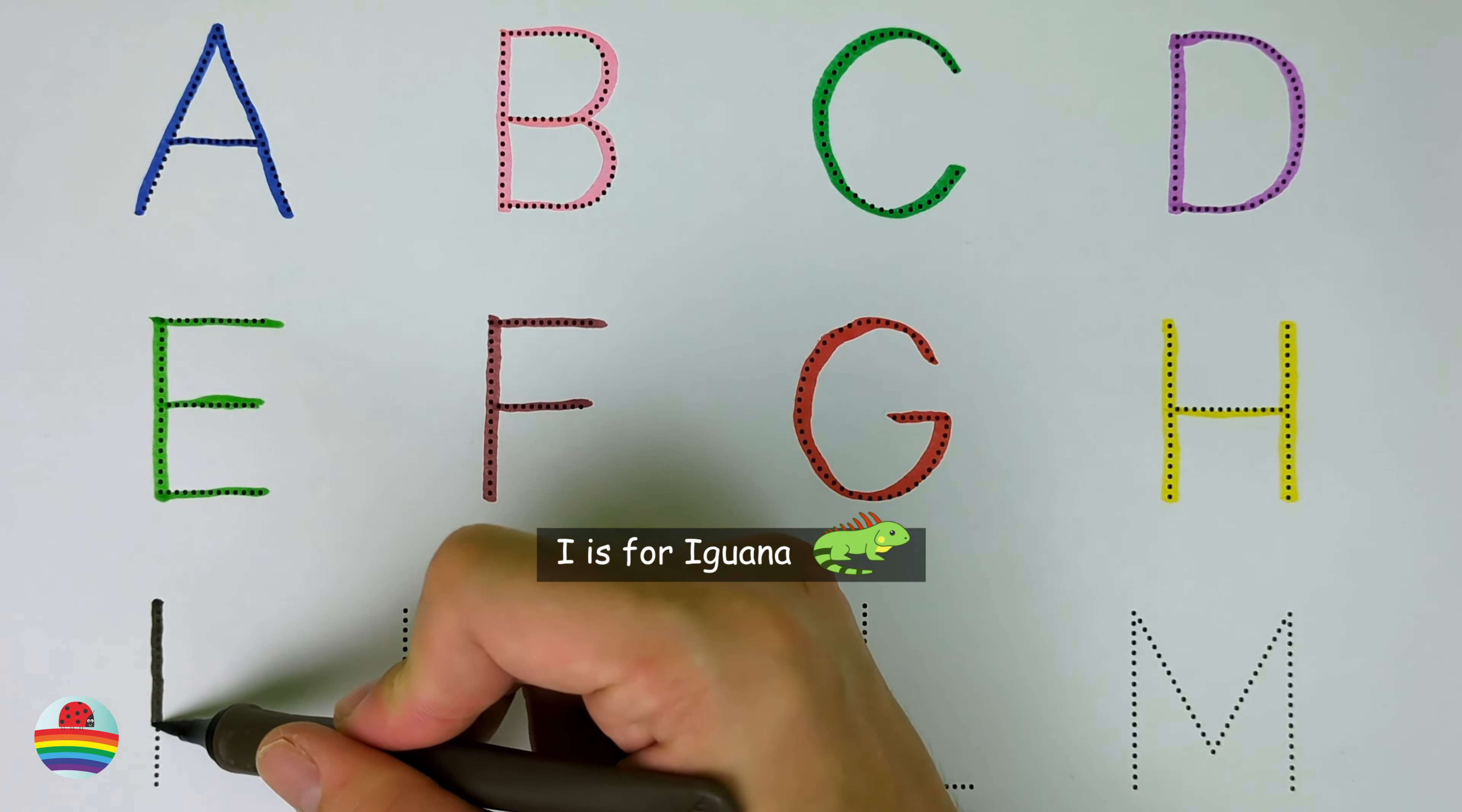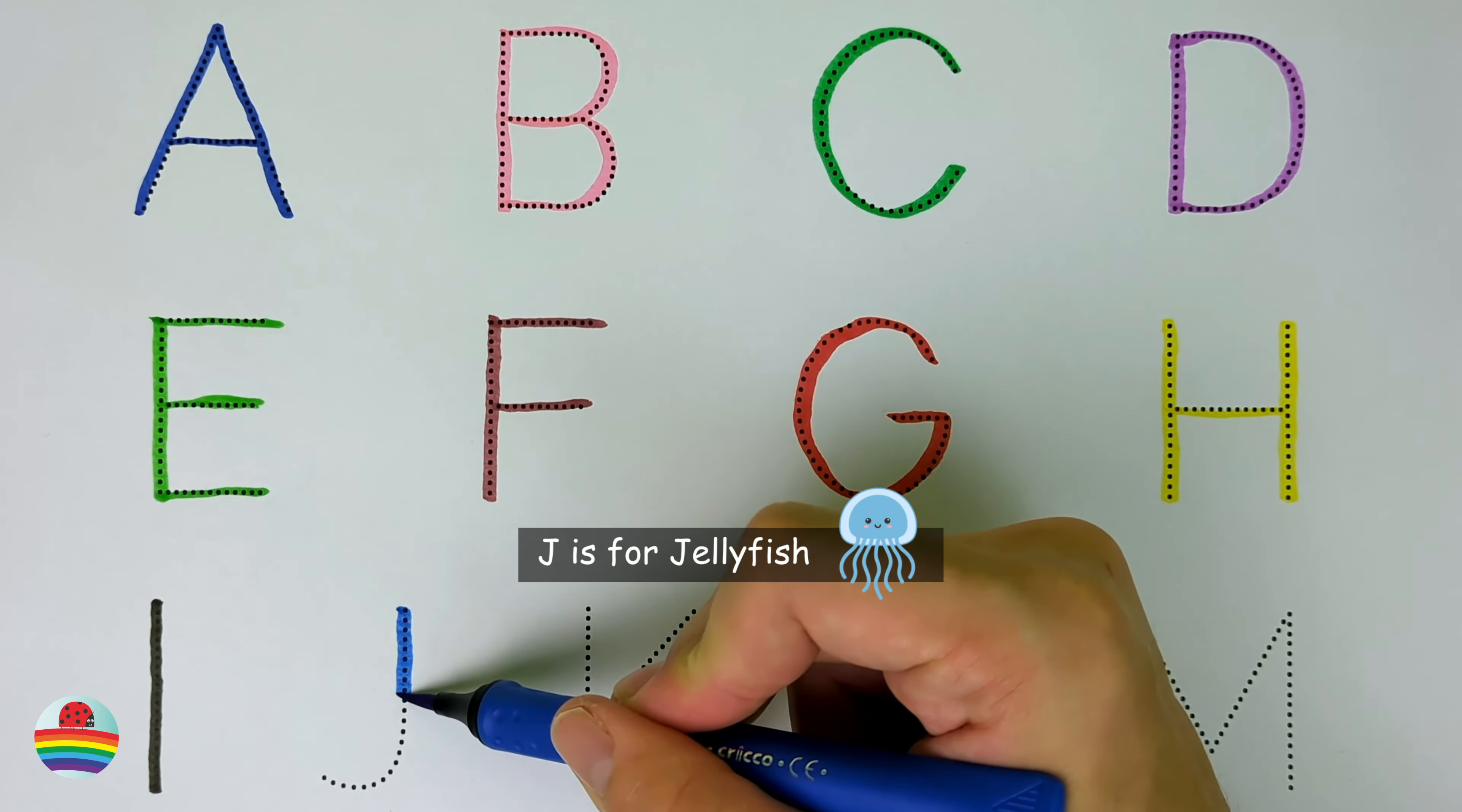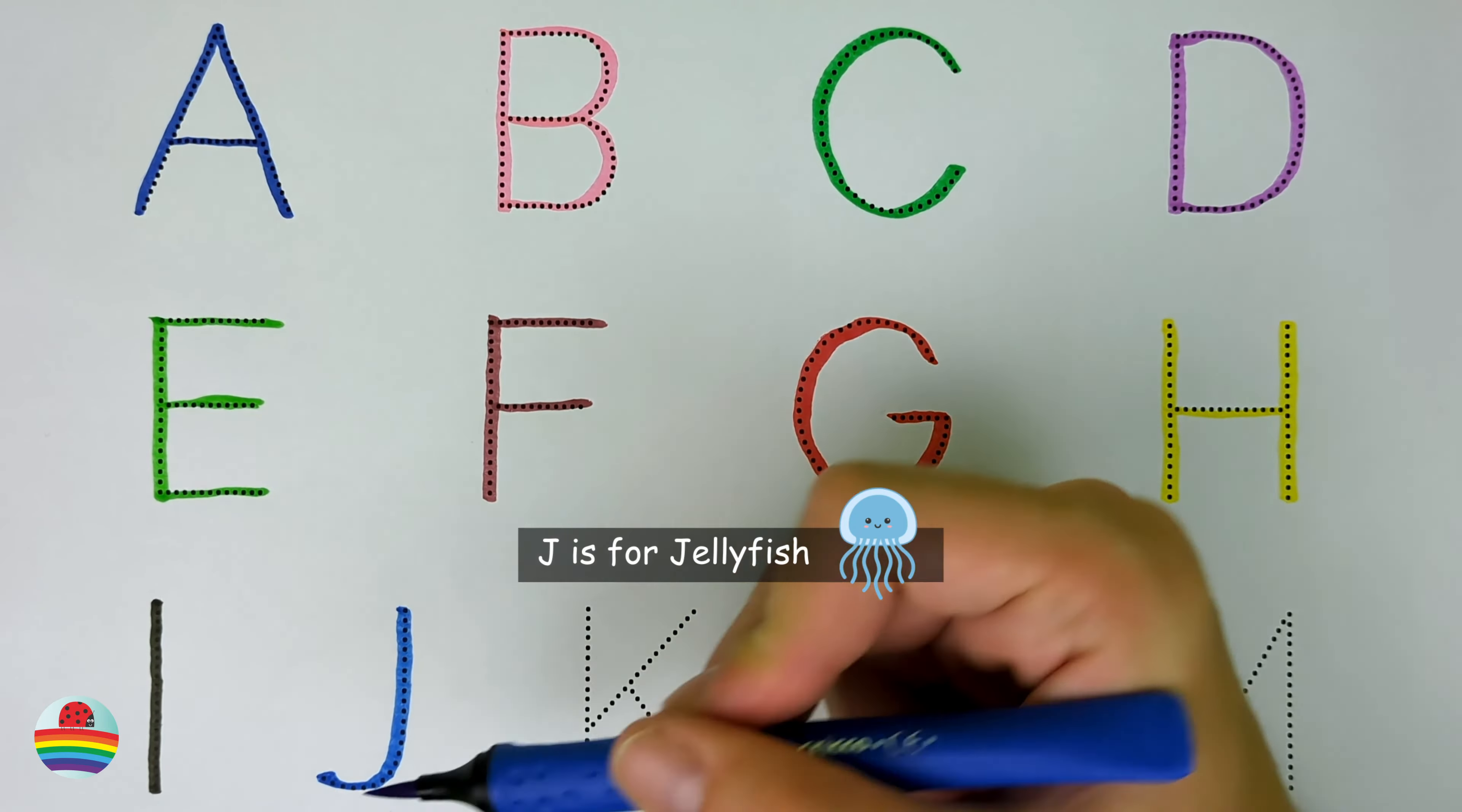I. I is for iguana. I. J. J is for jellyfish. J.